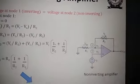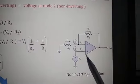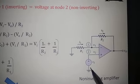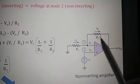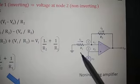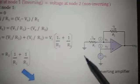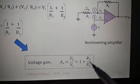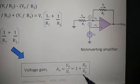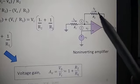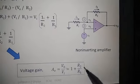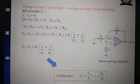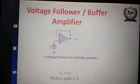This is the non-inverting amplifier where the input is given to the non-inverting terminal. These are the feedback and input resistances. The gain of the non-inverting amplifier is 1 plus Rf/R1 or 1 plus R2/R1.